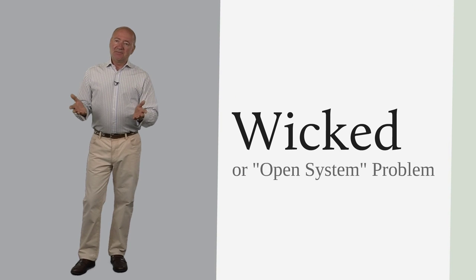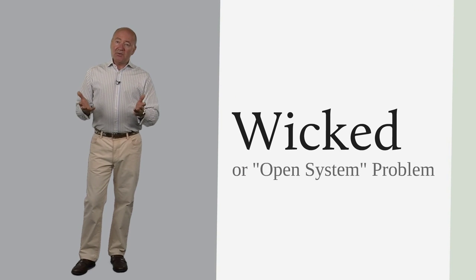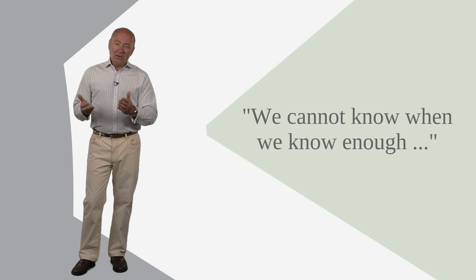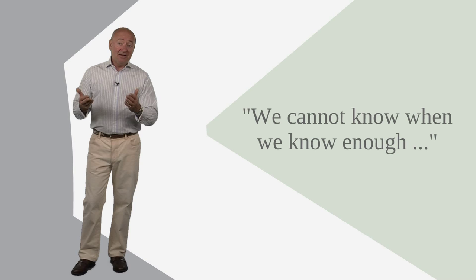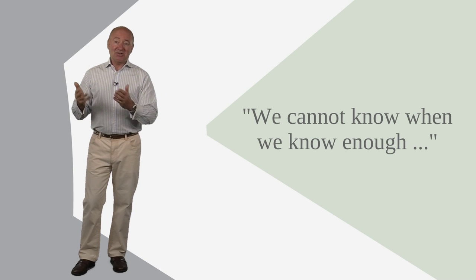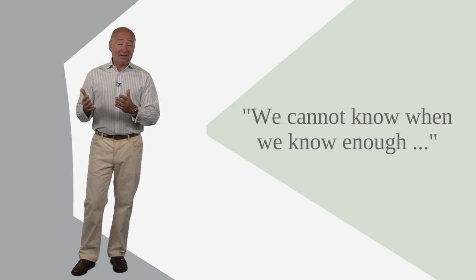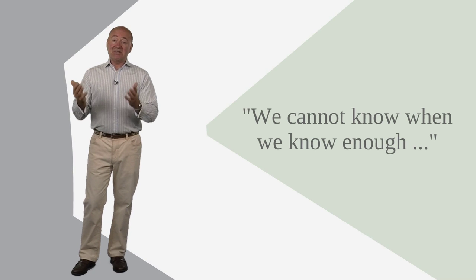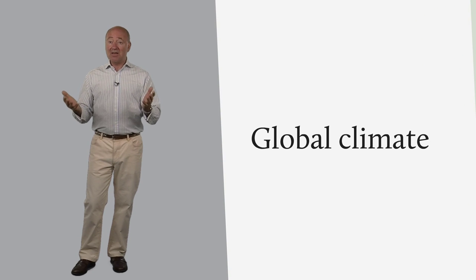An open system problem is one where we cannot know when we know enough to know that we know enough to be able to start to do something. Now there are many things in the world that are like this, but the biggest thing in the world that's like that is how the global climate works.